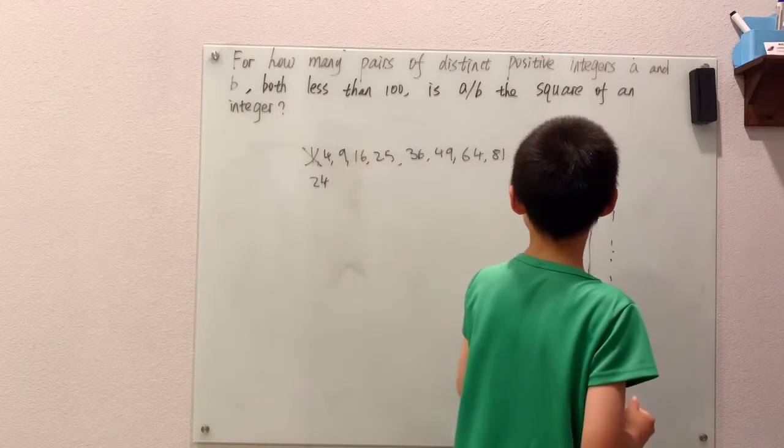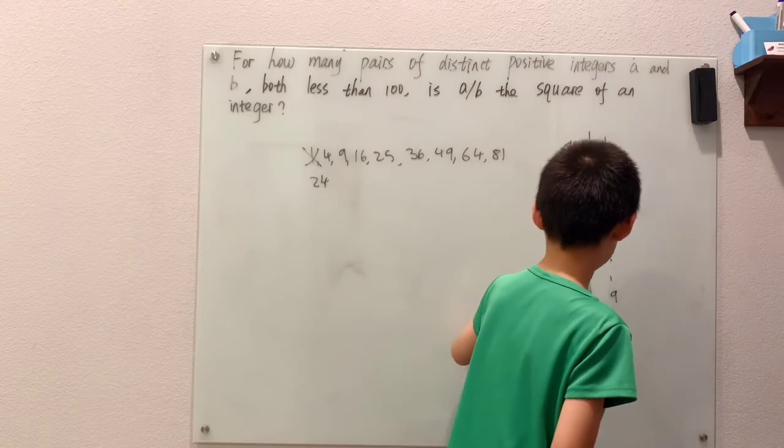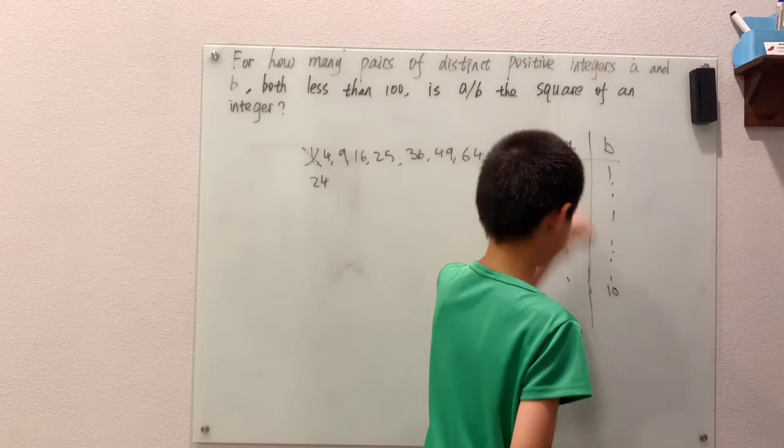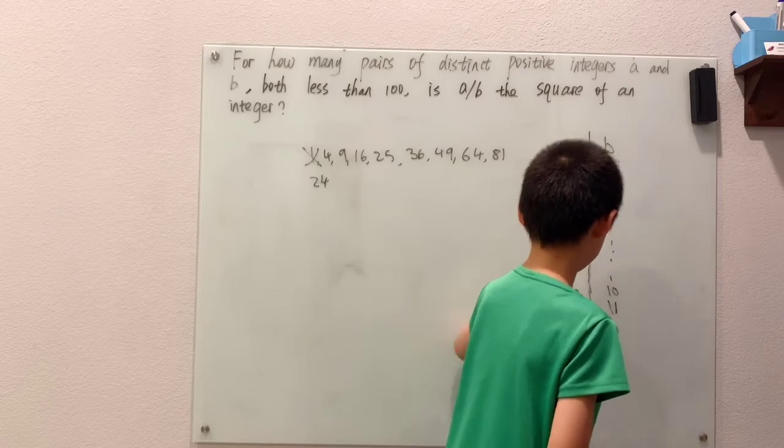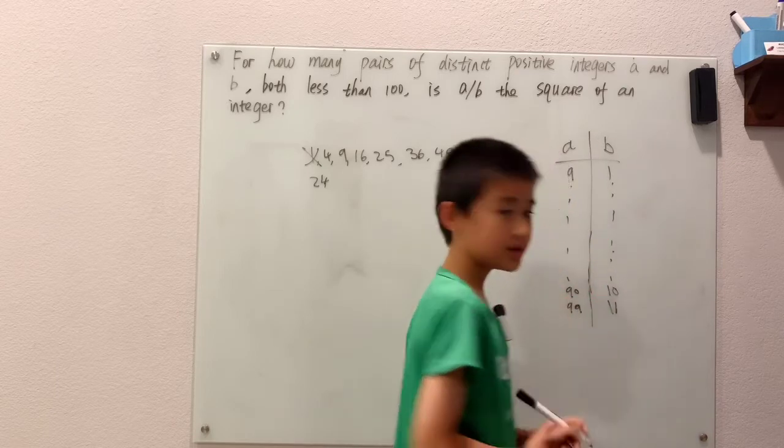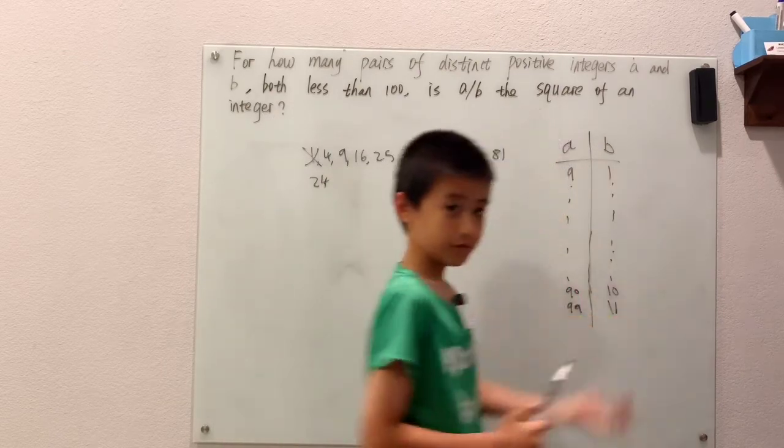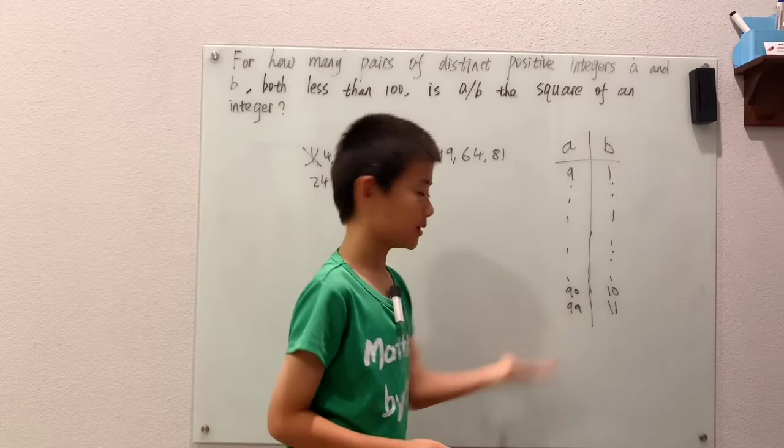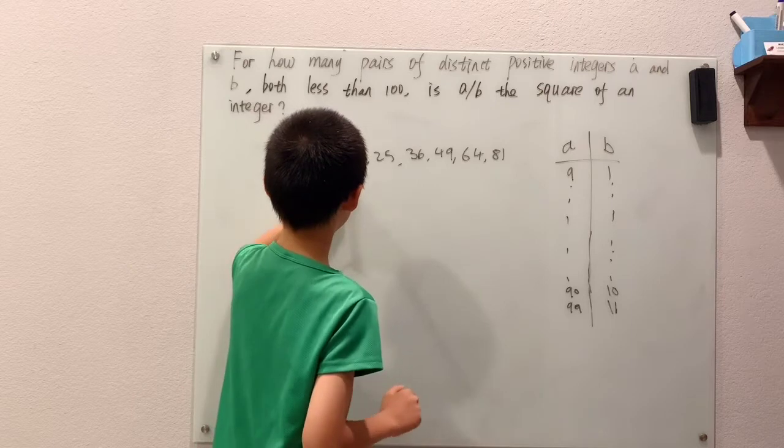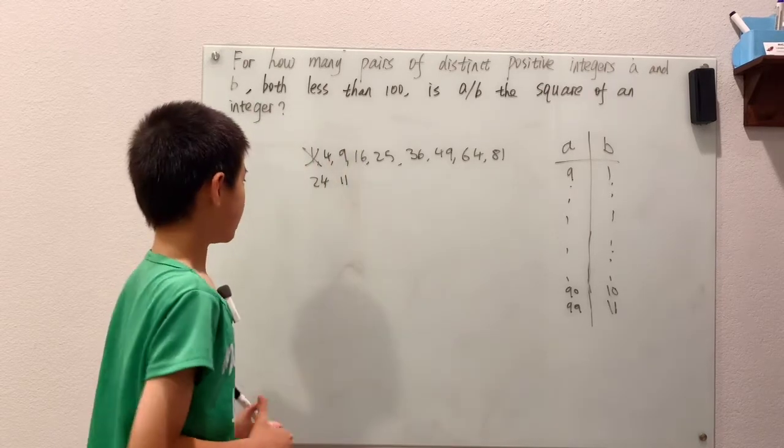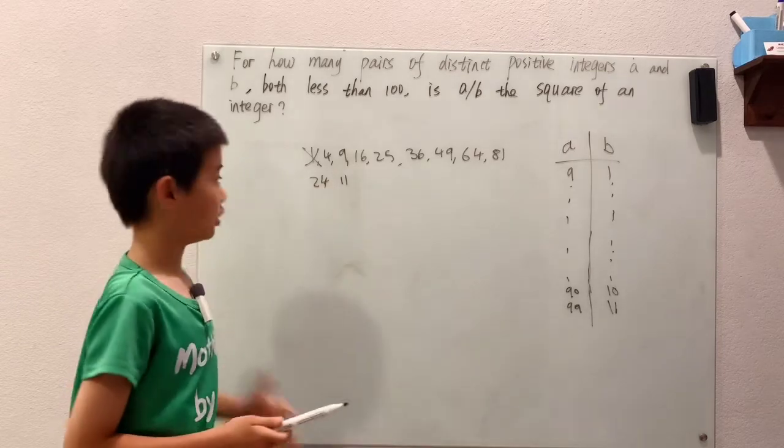Well, 9 times 9, actually I'm just going to use a whole number, 10. 9 times 10 is 90. Then 9 times 11 is just easily 99. That means for the multiples of 9, they just go from 1 to 11, since 9 times 11 is 99, which means for 9 there's 11 options.